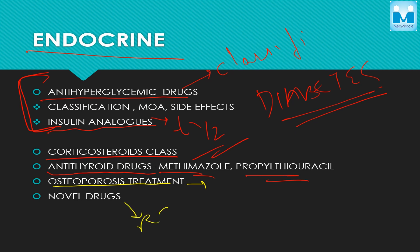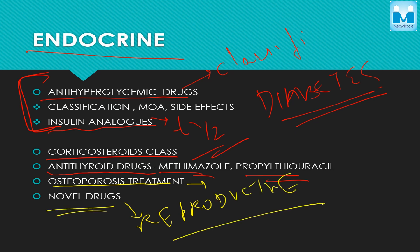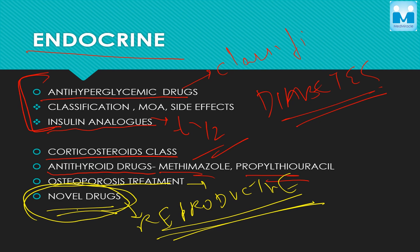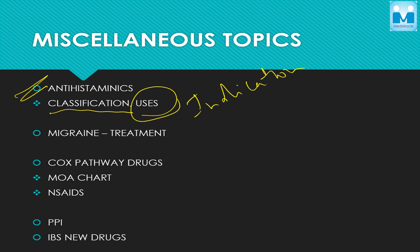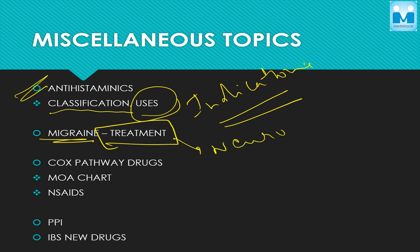In the reproductive section, there are a lot of novel drugs and they are frequently asked by name, so you have to be thorough with the new drugs in the reproductive section. Coming to miscellaneous topics — first is antihistamines: the major classification and various indications you have to know. Then migraine is an important topic; you have to know the drugs used in treatment — this is also covered in the neurology section in medicine.